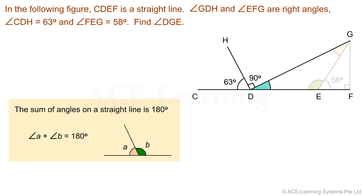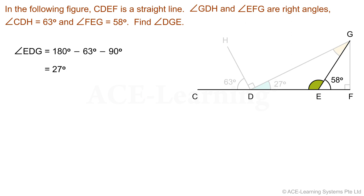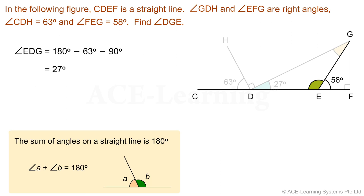Based on the property that the sum of angles on a straight line is 180 degrees, angle EDG equals 180 degrees minus 63 degrees minus 90 degrees, which equals 27 degrees. Next, angle DEG and angle GEF are angles on the straight line CDEF. Based on the same property, angle DEG equals 180 degrees minus 58 degrees, which equals 122 degrees.